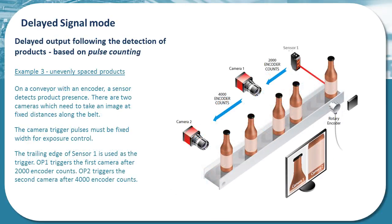In this third example using delayed signal mode, we again illustrate a situation where multiple outputs are required following a trigger from a product detection sensor, but in this case the products are unevenly spaced through the inspection part of the application. Encoder counts are therefore used here, where camera 1 is triggered after 2,000 encoder counts from the product being sensed, and camera 2 is triggered after 4,000 encoder counts from the same product sensor.